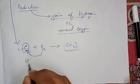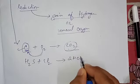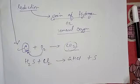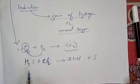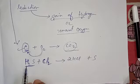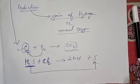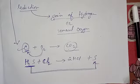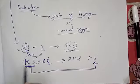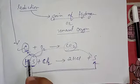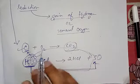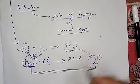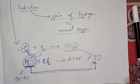Now consider the reaction: H2S + Cl2 → 2HCl + S. There is no oxygen here, but there is hydrogen. H2S is getting transformed into sulfur — hydrogen sulfide is losing hydrogen. So when removal of hydrogen is involved, we say that is also oxidation. H2S is undergoing oxidation.